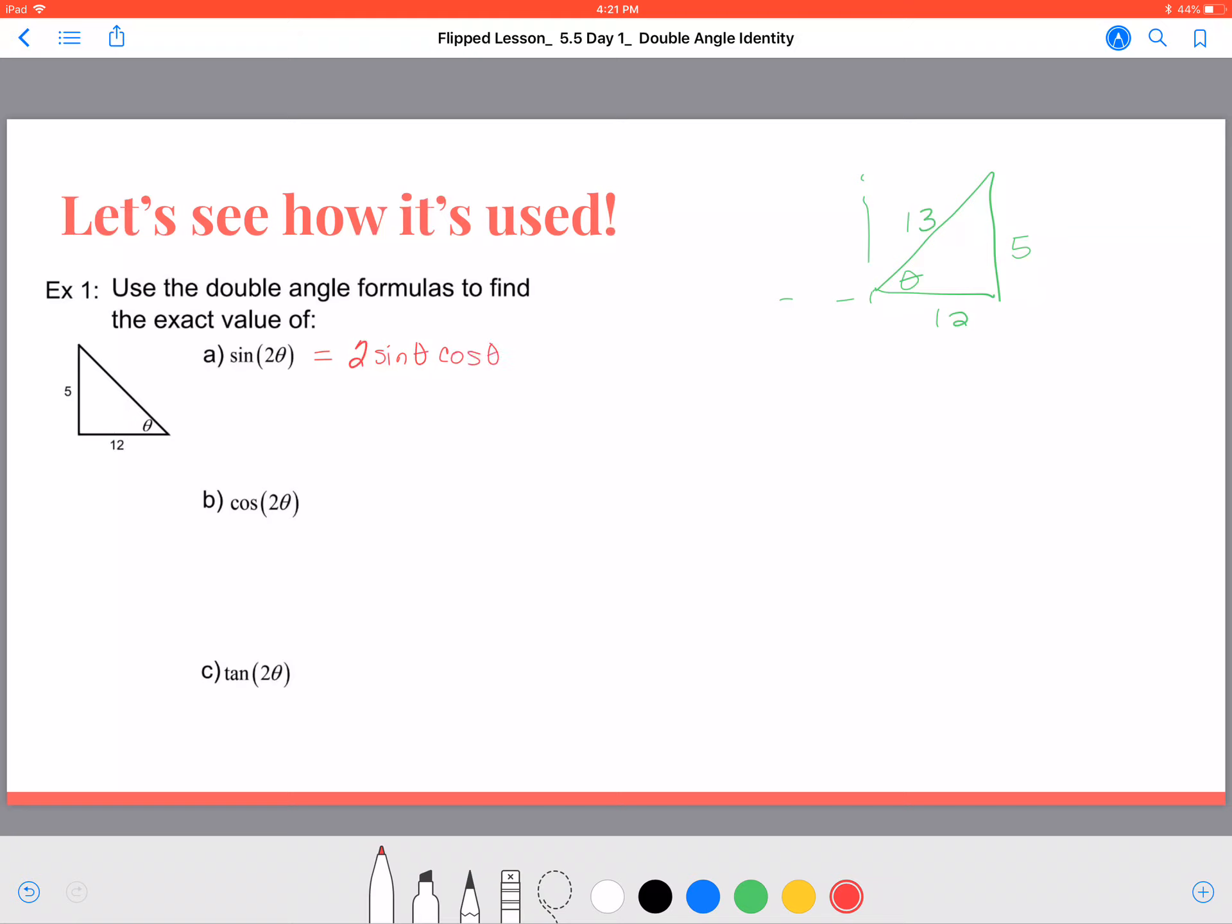So we just need to look at this triangle drawn to find what the sine and cosine of θ is. That will be 2 times the sine of this triangle over here is 5 over 13, and the cosine of the same triangle is 12 over 13.